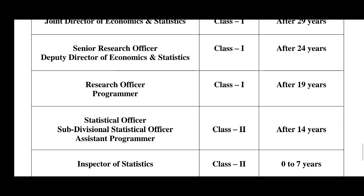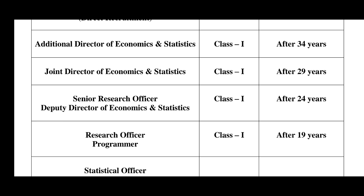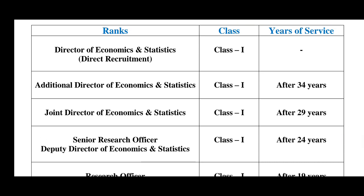Further up the hierarchy are the Senior Research Officer and Deputy Director of Economics and Statistics. Promotion to Deputy Director is qualified after approximately 24 years of service. After about 29 years, one can join as Director of Economics and Statistics and qualify for Class 1. After completing approximately 34 years, one qualifies for Additional Director of Economics and Statistics.